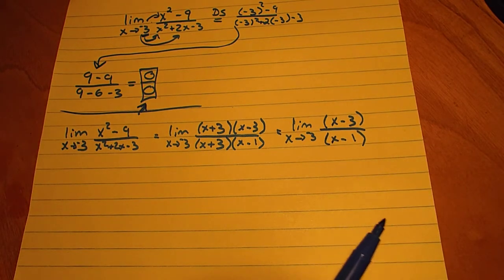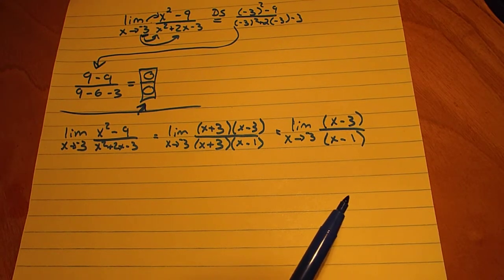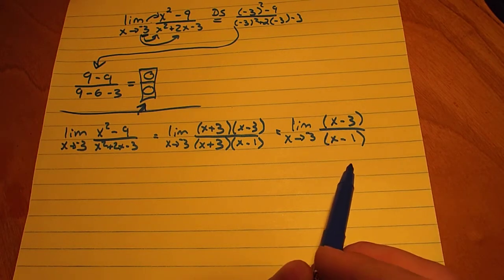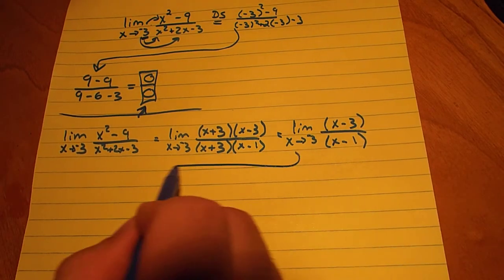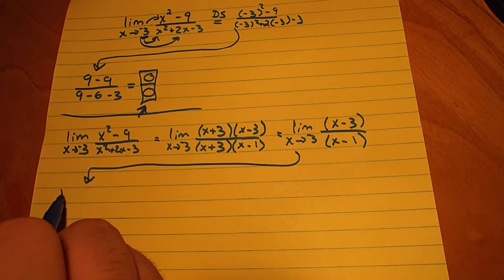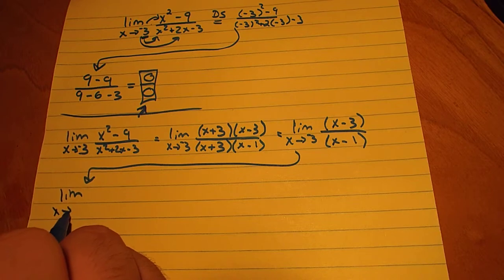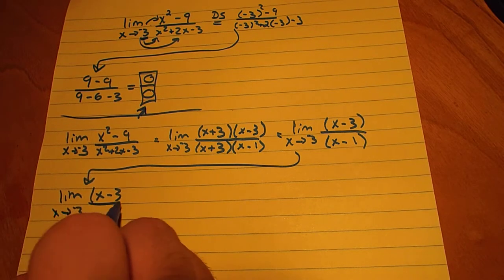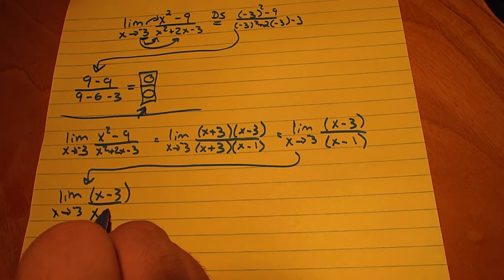And now is when we can try direct substitution again. Because now, as we see, it looks like it's going to work out. So bring this down here, rewrite it. The limit as x approaches negative 3 of x minus 3 over x minus 1.